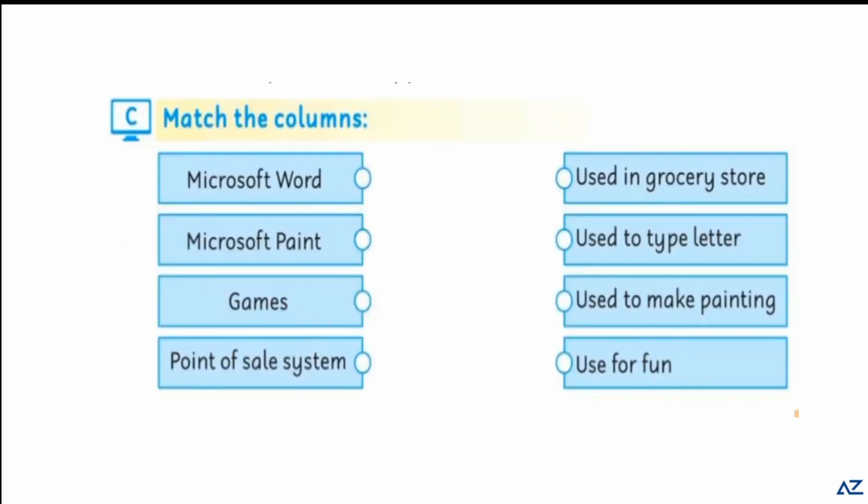Now match the columns. Microsoft Word used to type letter, Microsoft Paint is used to make painting, games used for fun, and point of sale system is used in grocery stores.